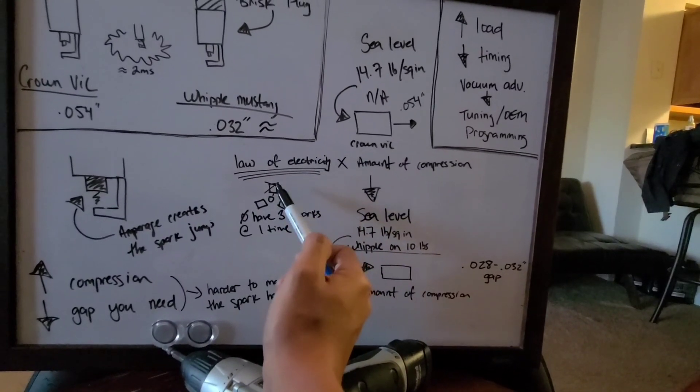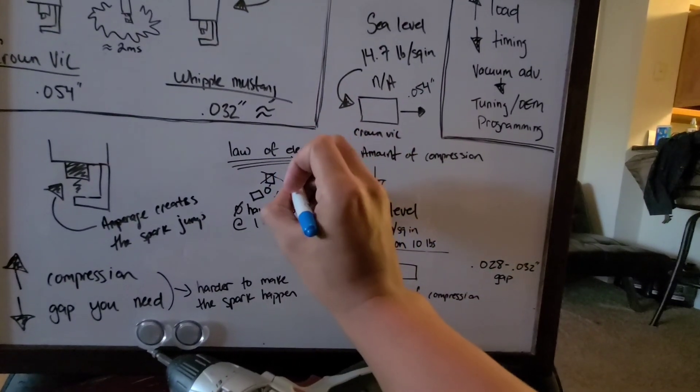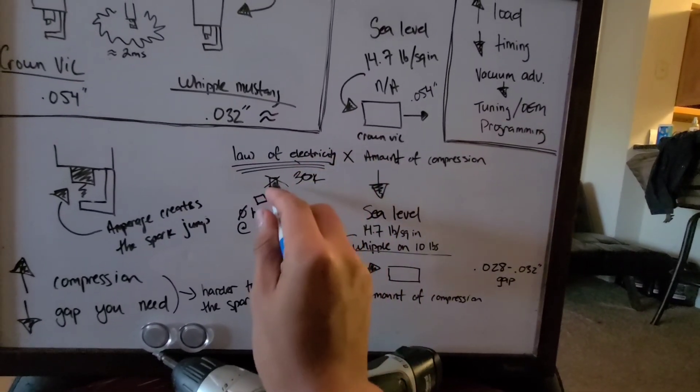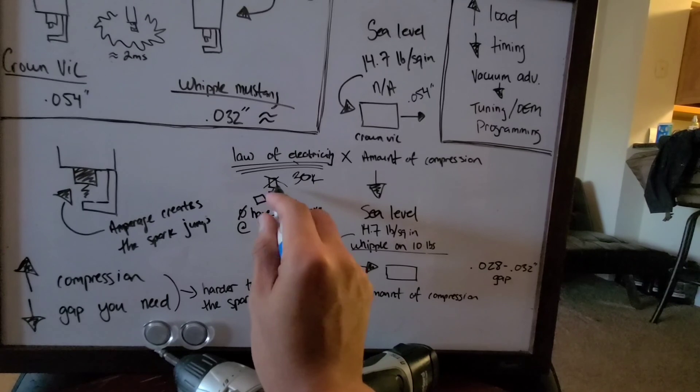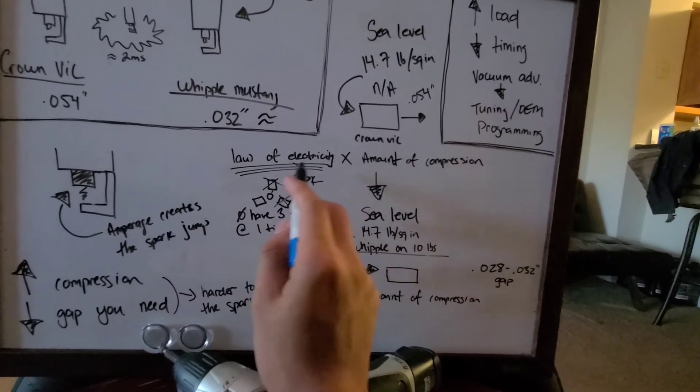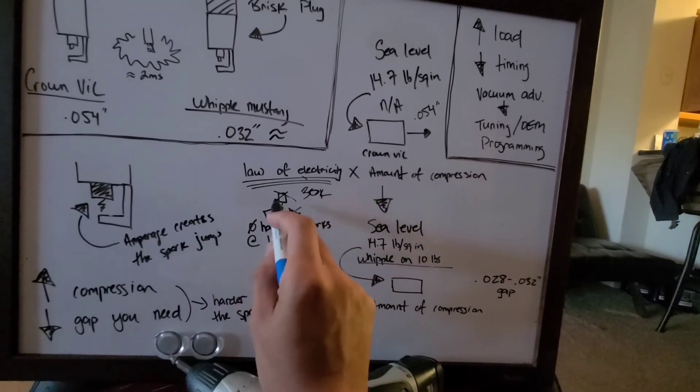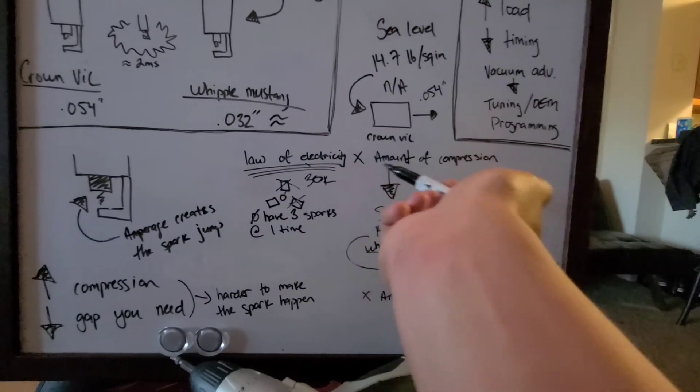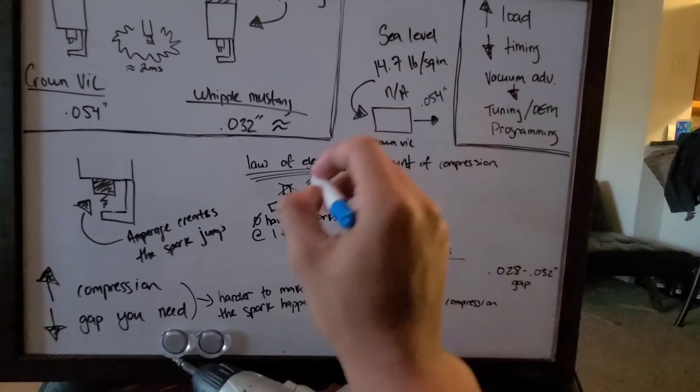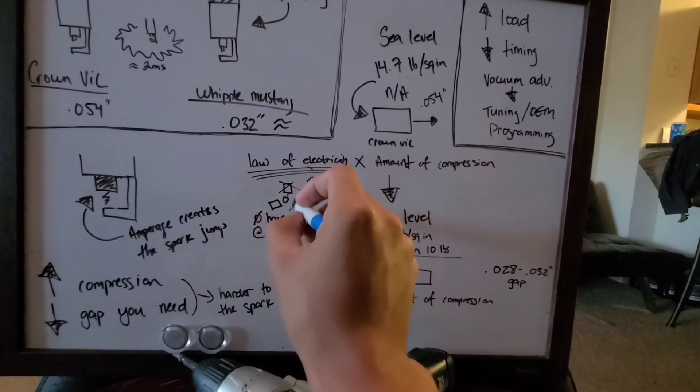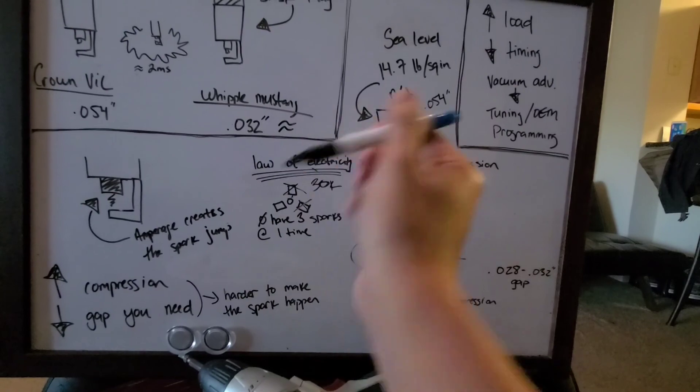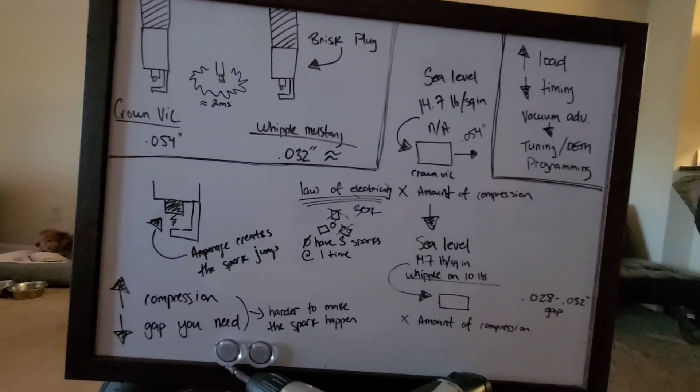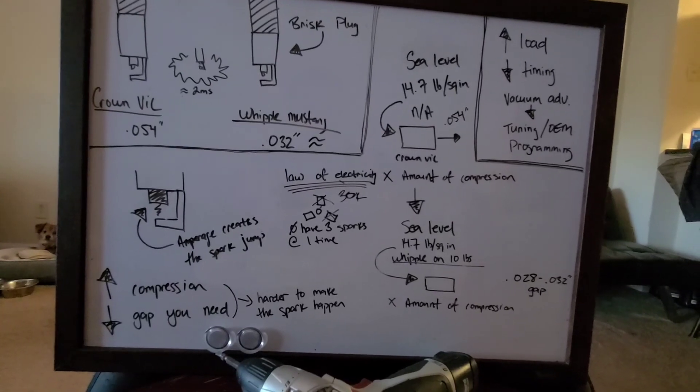So as that gap gets bigger over time, give or take thirty thousand miles, it's not going to spark here anymore. It's now going to spark over at this guy. So that's why a plug like this, people refer to it as a hundred thousand mile plug because every thirty thousand, essentially most cars get a spark plug change. This is why they call it a hundred thousand mile plug because it's going to go one, two, and then three. So that's kind of the quick rundown on that.